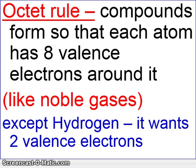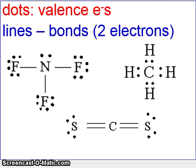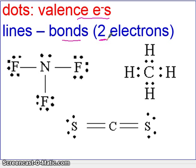So let's break down a little more what these Lewis structures will look like. You see three Lewis structures here. The dots represent valence electrons, and the lines will represent bonds. Each line actually represents two electrons. Let's analyze how each element obeys the octet rule.